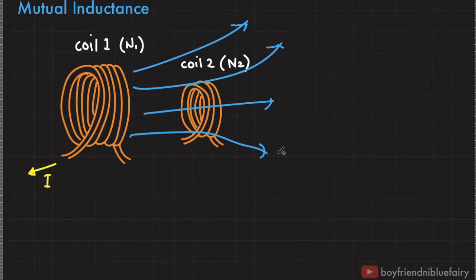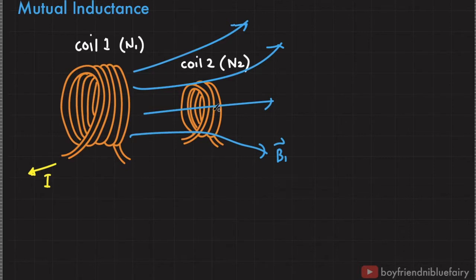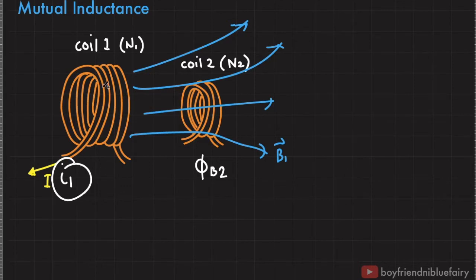Let's name the magnetic field generated by coil 1 as B_sub_1. Since coil 2 has a cross-sectional area, it experiences a magnetic flux due to the magnetic field of coil 1. We name this magnetic flux as phi_sub_B2 to denote the magnetic flux experienced by coil 2. Let's name the current that flows through coil 1 as I_sub_1. Based on Faraday's law of induction, if this current I_sub_1 changes with time, there will be an induced EMF on coil 2 due to coil 1.